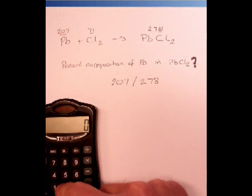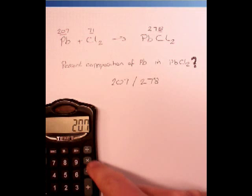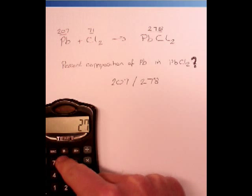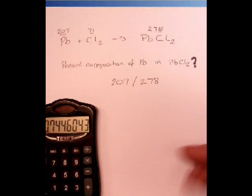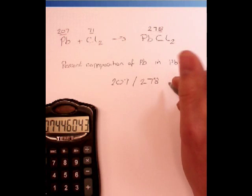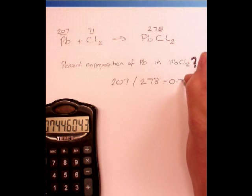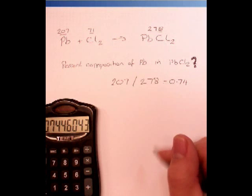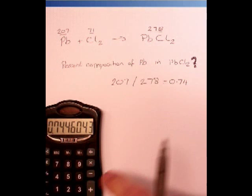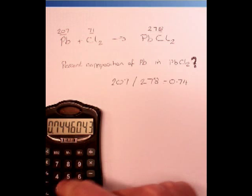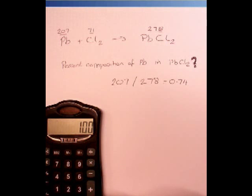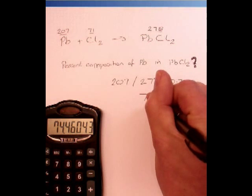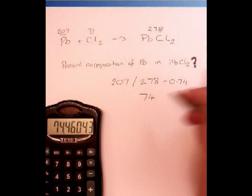Lead is 207 out of the total of 278 in lead chloride. So, 207 divided by 278 gives me a value of 0.74 to two figures. Now, if I multiply that by 100, I will have a percentage of 74%.